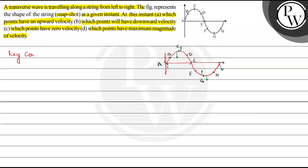The concept we will use is: vp is equal to minus v multiplied by (∂y/∂x), where vp denotes the velocity of the particle.